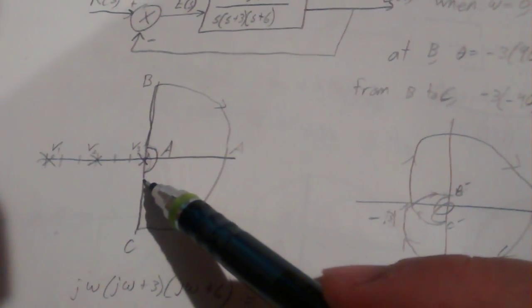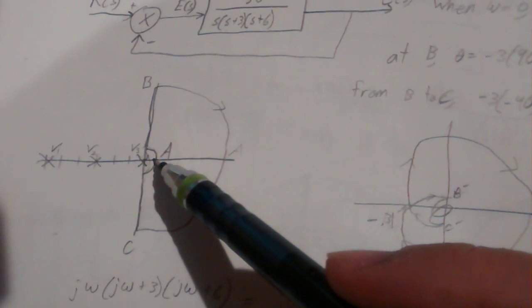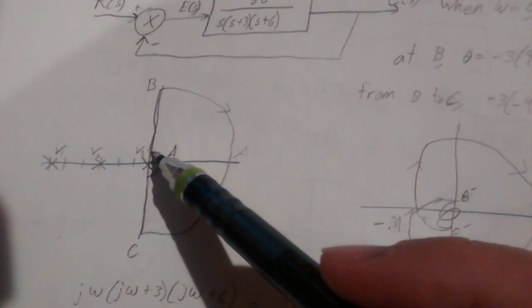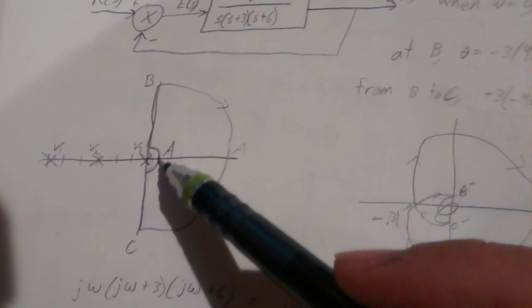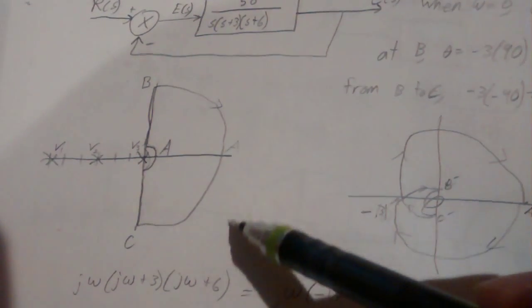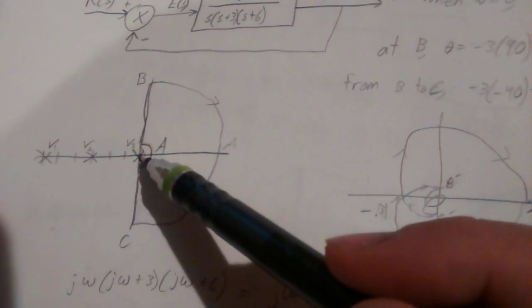It starts at the origin, just skipping around the pole an infinitesimal amount, going all the way up to infinity, coming all the way around at infinity, and then back to 0 again.